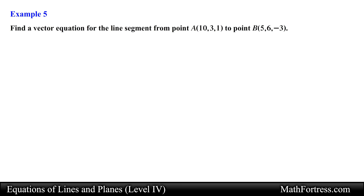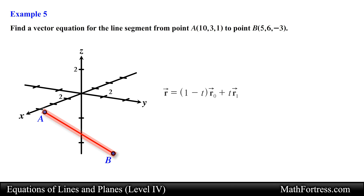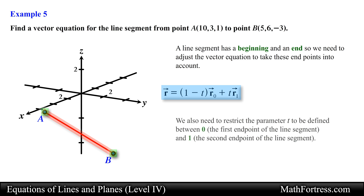Let's end the video with a final example. Find a vector equation for the line segment from point A to point B. We are asked to determine a vector equation for a line segment that starts at point A and ends at point B. The vector equation for a line segment is slightly different from that of a line because a line segment has a beginning and an end, so we need to restrict the parameter t to be defined between 0 and 1.